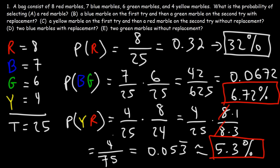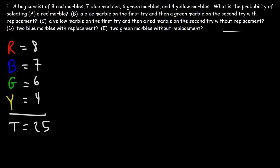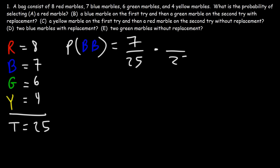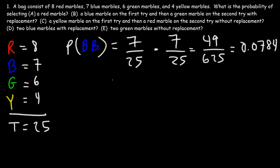Now for part D: what is the probability of selecting two blue marbles with replacement? Since it's with replacement, we're dealing with independent events. The probability of getting the first blue marble is seven out of 25. We put it back in, so we still have 25 marbles and seven blue marbles. On the second try the probability doesn't change. Seven times seven is 49, and 25 times 25 is 625, giving us 49 over 625, which equals 0.0784 — a 7.84% chance of selecting two blue marbles with replacement.